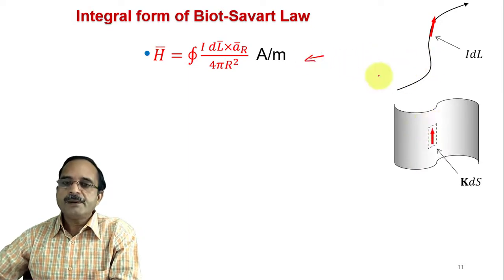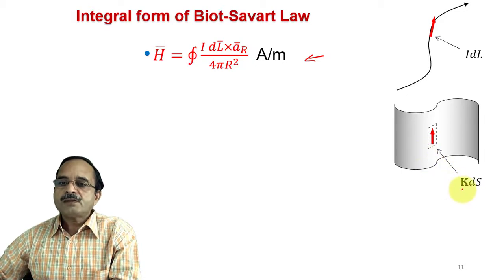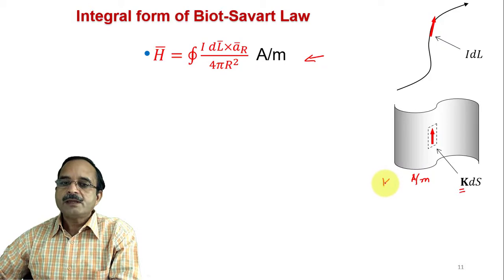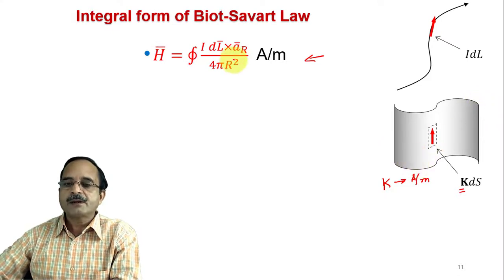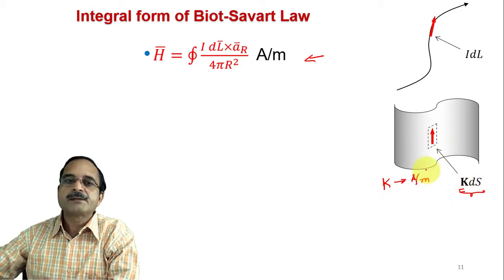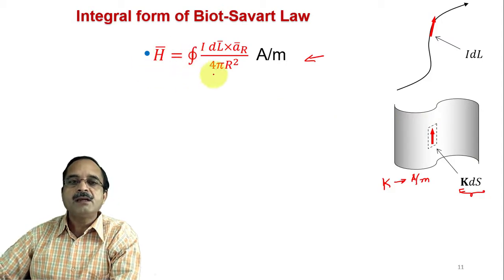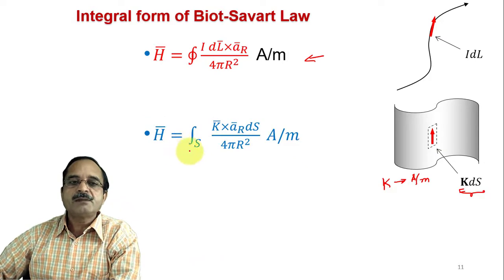If a current is flowing through a sheet, there is a surface current density K in Ampere per meter. The thickness of the sheet is assumed negligible, which is why the unit is Ampere per meter. If ds is a small differential surface area, then the current through it is K·ds. Integrating K·ds over the complete area of the sheet gives the total magnetic field intensity: H = ∬ K × ar·ds / (4π·r²). This is the surface integral form of Biot-Savart law.